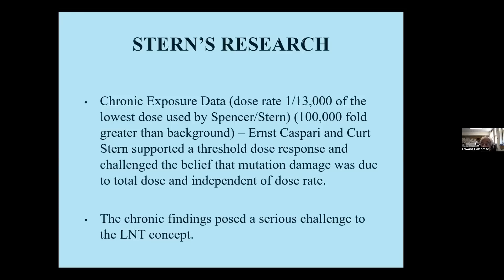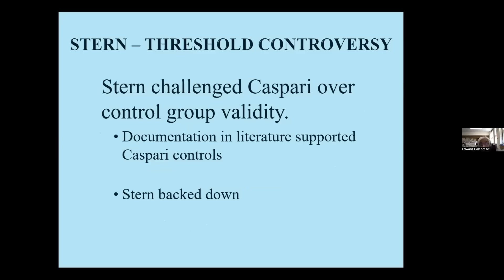But I give Casperi credit. He went into the literature, found a series of papers using the same model, looked at their background mutation rates, and found his mutation rate was right in the middle of those — it wasn't reading aberrantly high. He showed this to Stern. I'm going to give Stern great credit: Stern backed down. He said, 'I can't reject your control group.' So he's going to have to accept the threshold, because that's where the data lead. But that's not what he did. Stern — probably twisting Casperi's arm because he was the boss — decided to create a discussion in the paper that discounts the Casperi findings.